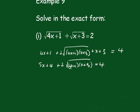We'll take these across to the other side, so we get 2√((4x+1)(x+3)) equals negative 5x. Now again, square both sides.